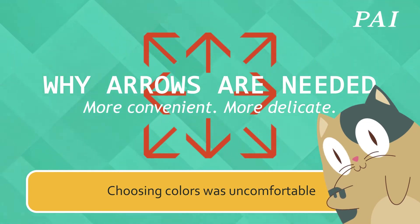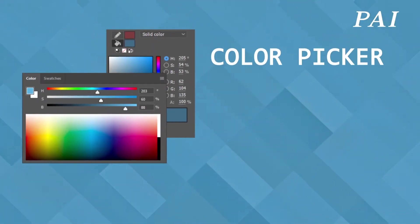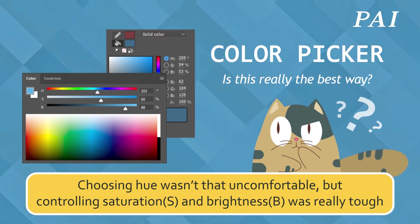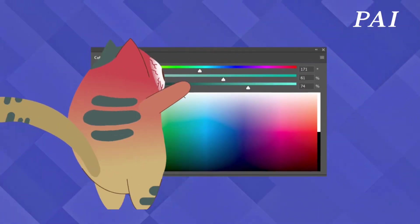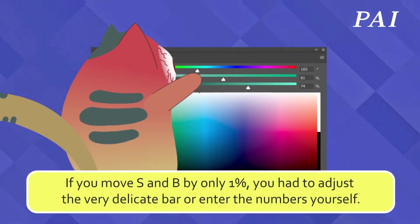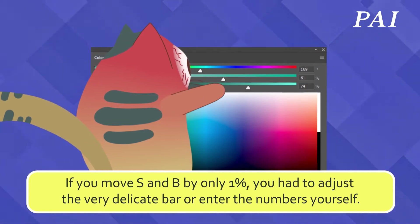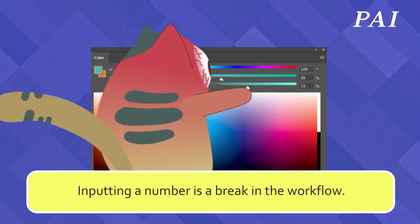Choosing hue wasn't that uncomfortable, but controlling saturation and brightness was really tough. If you move S and B by only 1%, you had to adjust a very delicate bar or enter the numbers yourself. Inputting a number is a break in the workflow.